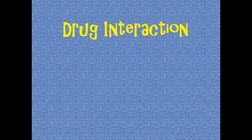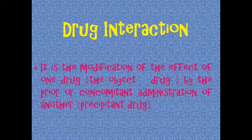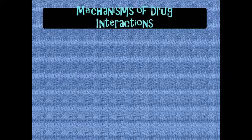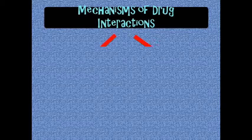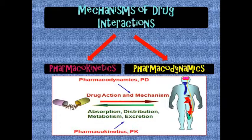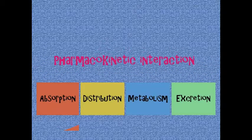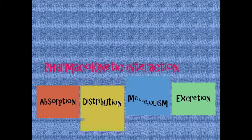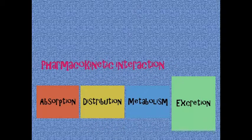Drug interaction is the modification of the effect of one drug by the prior or concomitant administration of another. The mechanisms of drug interactions are divided into two. The first is pharmacokinetics, which involves the effect of one drug on another drug's kinetics — including absorption, distribution, metabolism, and excretion.